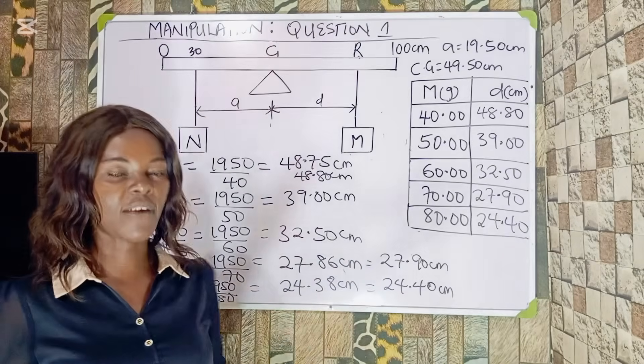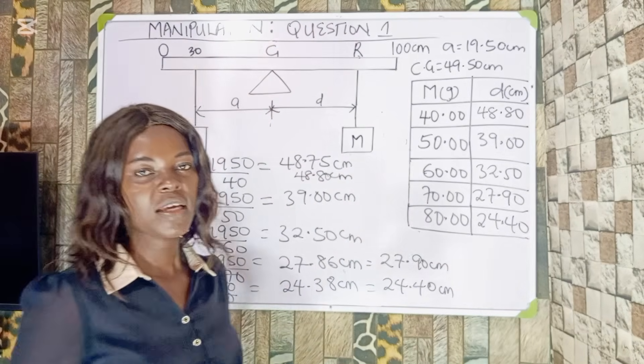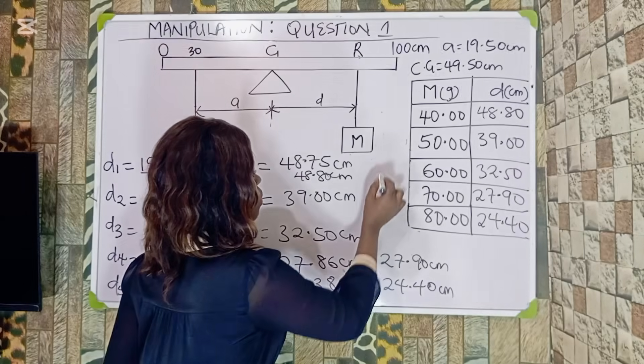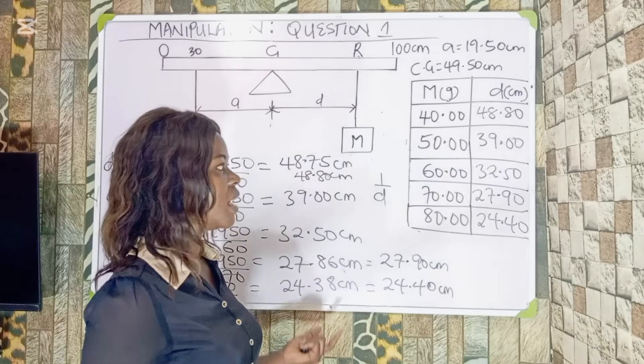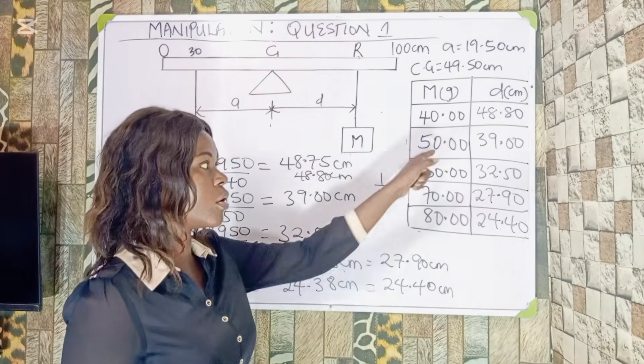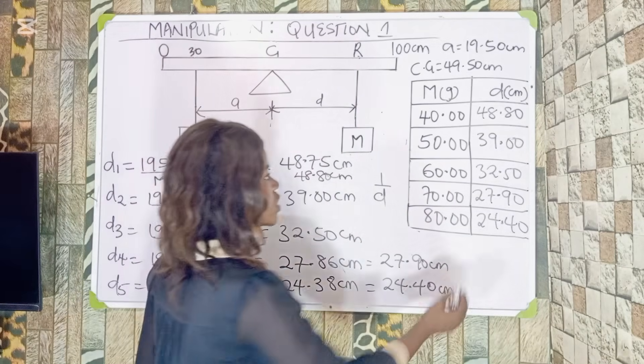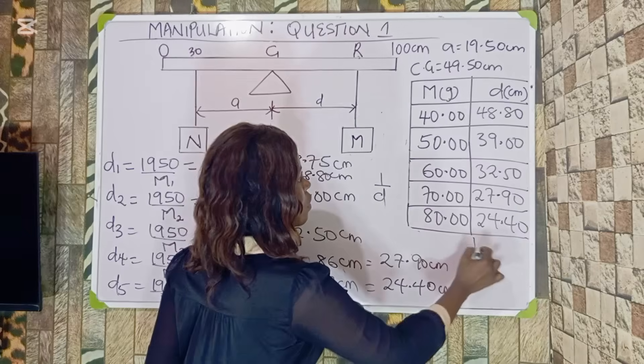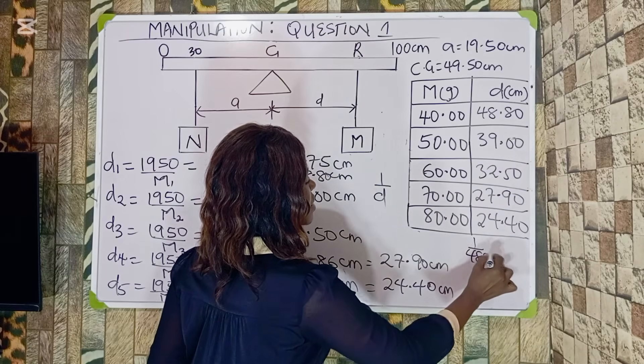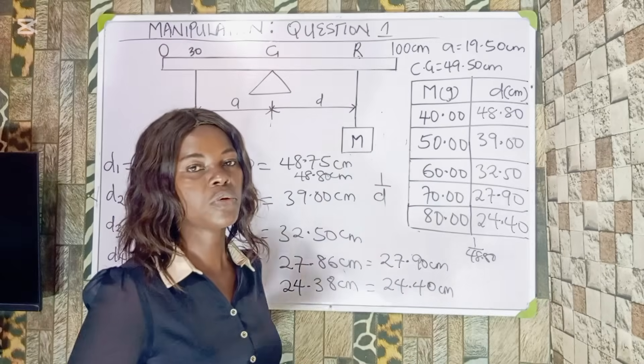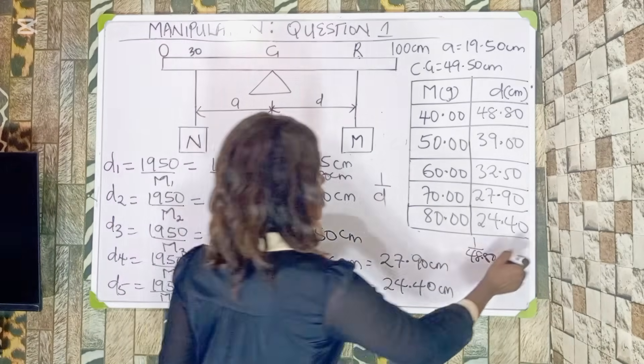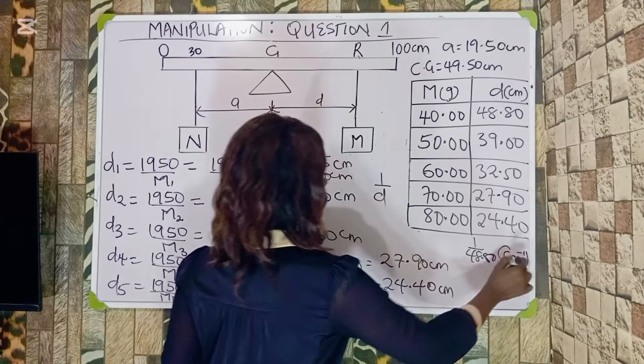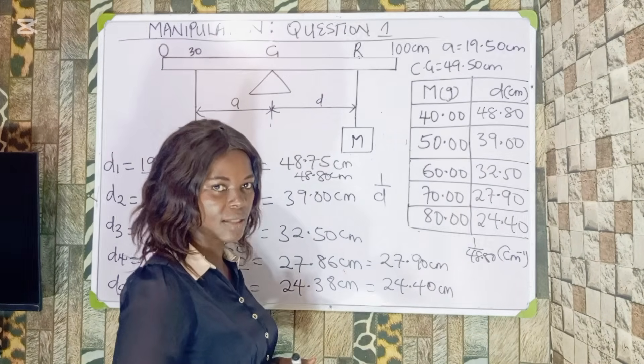You may be asked to find the inverse, inverse of the distance. Inverse simply means 1 over D. Whatever thing you have, you just have to have a column for it by saying this is 1 over 48.80. Anything you have, you leave it in three decimal places. And your units must be in the centimeter inverse.